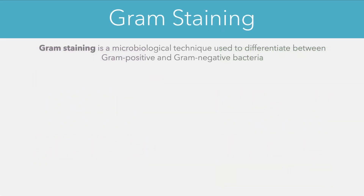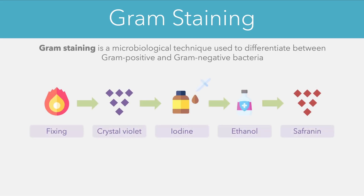Let's now take a look at the process of gram staining, which is a technique used to differentiate between gram positive and gram negative cells under a microscope. This process involves a few different steps and we're going to be taking a look at each of these steps individually.